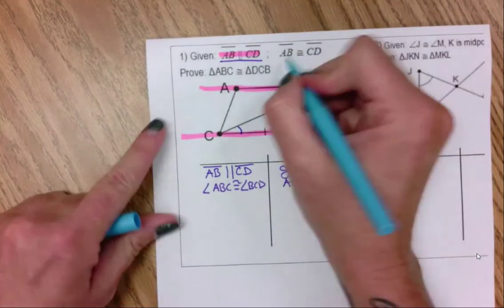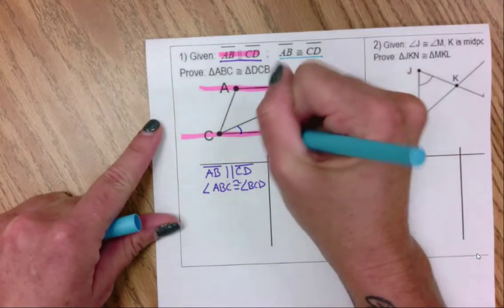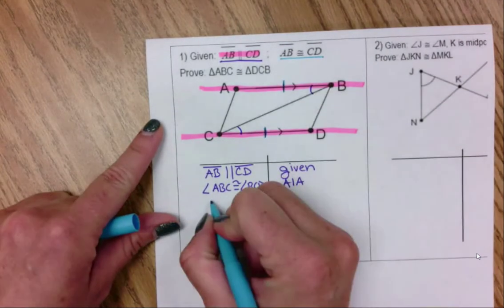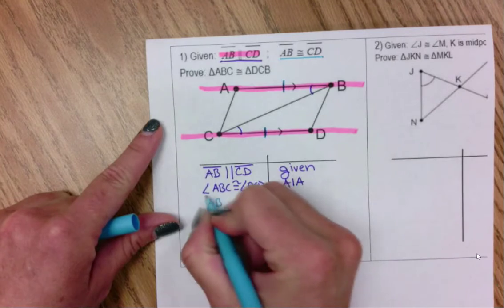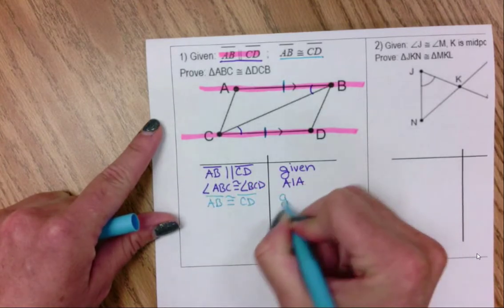The next thing I know, AB is congruent to CD. And this was also given to me.